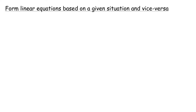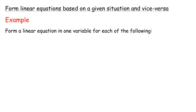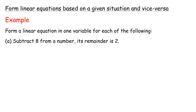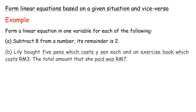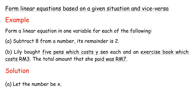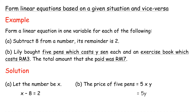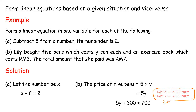Form linear equations based on a given situation, and vice versa. Example: form a linear equation in one variable for each of the following. (a) Subtract 8 from a number; its remainder is 2. (b) Lily bought 5 pens which cost Y sen each and an exercise book which costs RM3. The total amount she paid was RM7. Solution: (a) let the number be x: x - 8 = 2. (b) The price of 5 pens = 5Y. Therefore 5Y + 300 = 700.